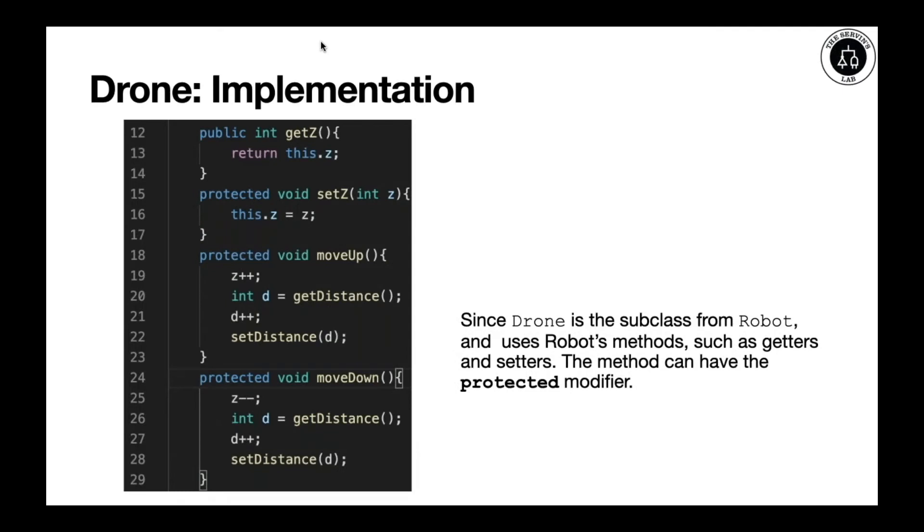This implementation of drone basically inherits all the attributes from robot. And most of these methods must have a different type of encapsulation. That is why, for example, setZ, moveUp, moveDown, they're all protected. The reason why is because we're going to have a collaboration or a consultation between robot and drone. This will allow us to keep the integrity of our fields consistent with the contract that we want to implement. And not only that, it will allow us to extend to a drone and use them in this class. And nobody should be able to touch the fields, for example, X, Y, and distance.